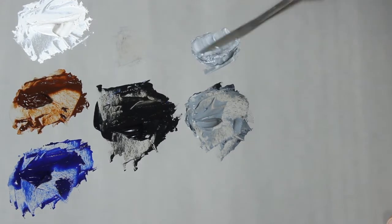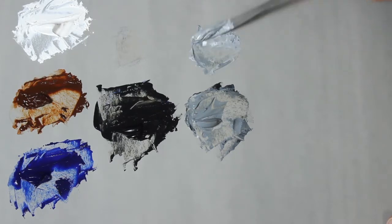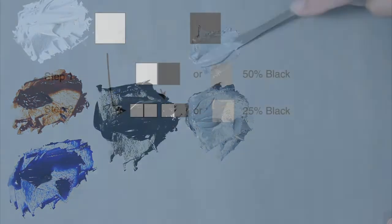I put together another graphic that demonstrates how the percentages work. Adding an equal amount of white to my previously created 50 percent black generates a gray that contains one part black and three parts white, or 25 percent black.